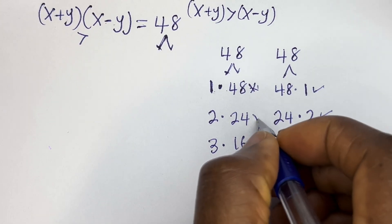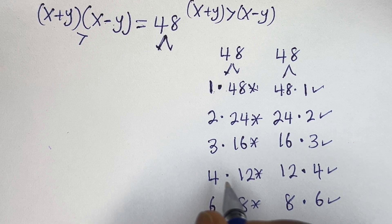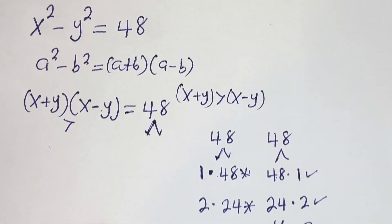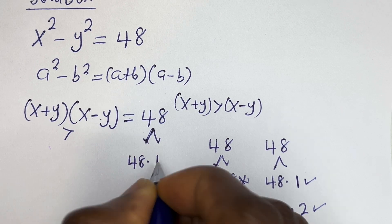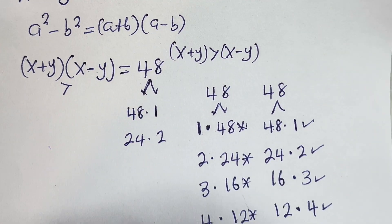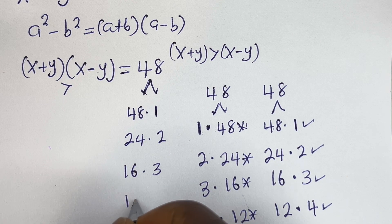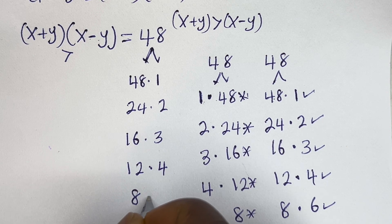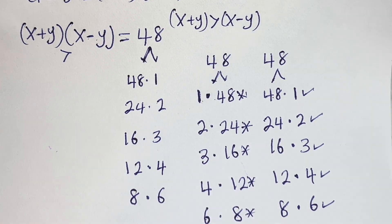Why are some pairs rejected? Because 6 is less than 8, 4 is less than 12, 3 is less than 16, and 2 is less than 24. Therefore, our valid factor pairs are: 48 × 1, 24 × 2, 16 × 3, 12 × 4, and 8 × 6. So we have 5 cases to consider.